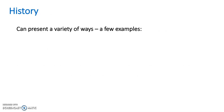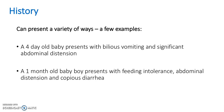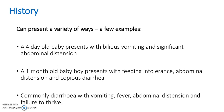The history. A patient may present in a variety of ways. Here are a few examples — let's see if you can pick out the key points. A 4-day-old baby presents with bilious vomiting and significant abdominal distension. Or a 1-month-old baby boy presents with feeding intolerance, abdominal distension and copious diarrhoea. Commonly diarrhoea with vomiting, fever, abdominal distension and failure to thrive will be the history.